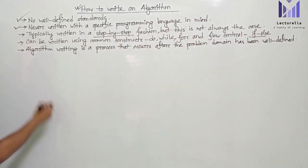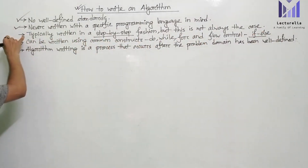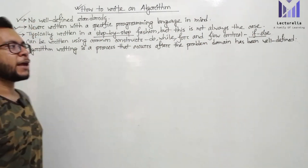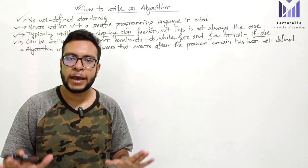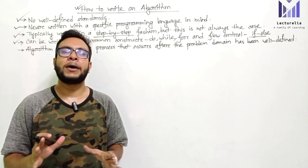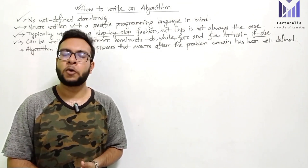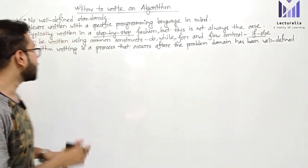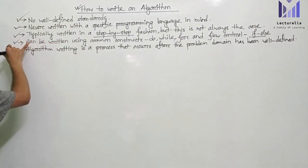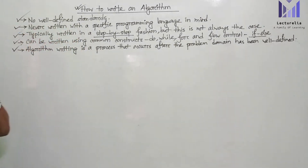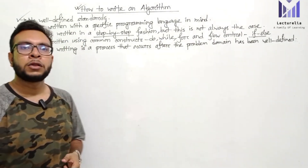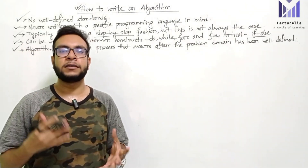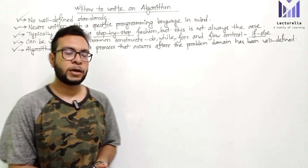The next important point is that algorithm writing is a process that occurs after the problem domain has been well-defined. Once we understand what the problem actually is, we can build up the solution. With proper knowledge of the problem, we can start writing the algorithm. For example, if we want to multiply two numbers and store the result, we write the algorithm for that.